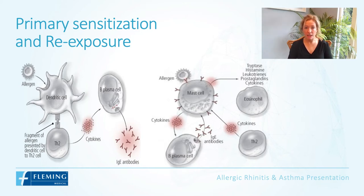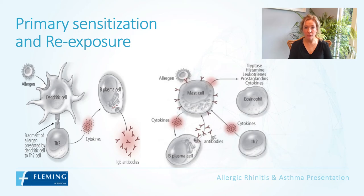At this point the patient has developed no symptoms, but their system is primed and ready for re-exposure. When the patient is exposed again to grass pollen, the allergen attaches to the antibodies on the outside of the mast cell, causing it to become activated and degranulate. Inside the mast cell are inflammatory chemicals which are then released, including histamine and leukotrienes.